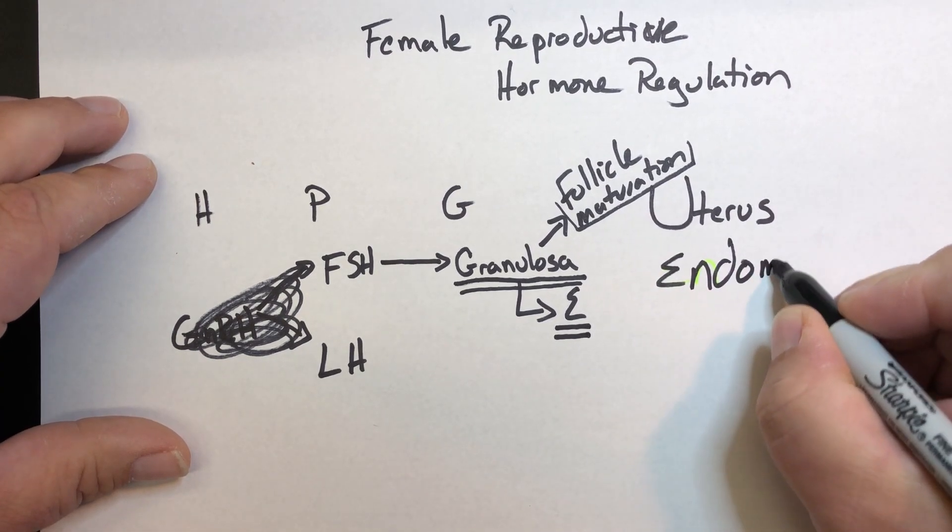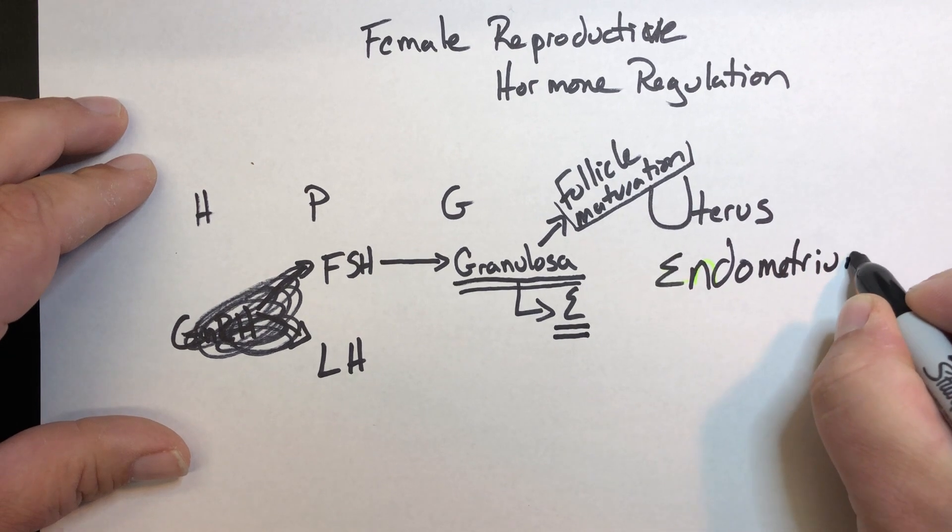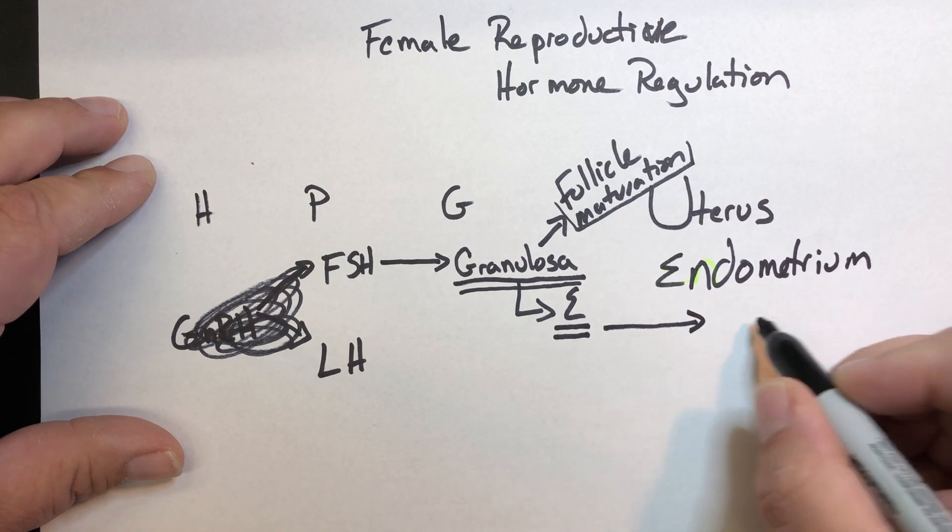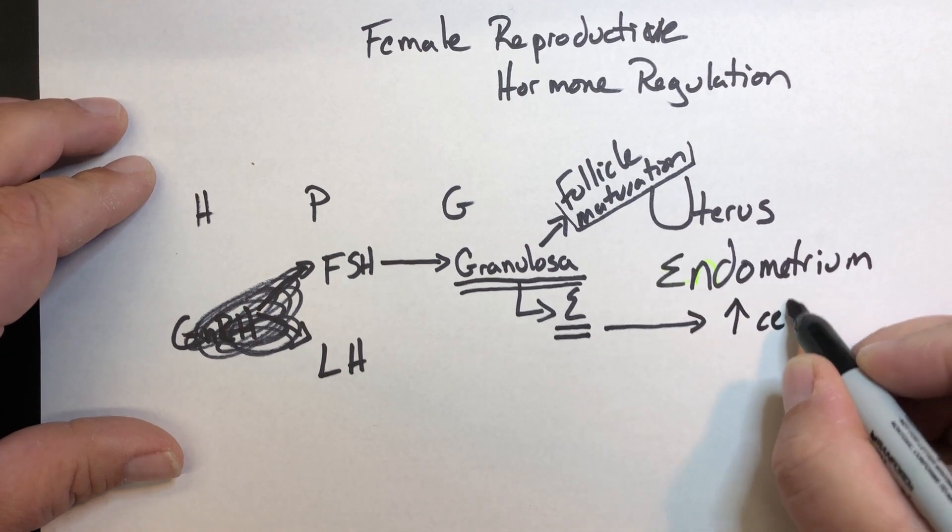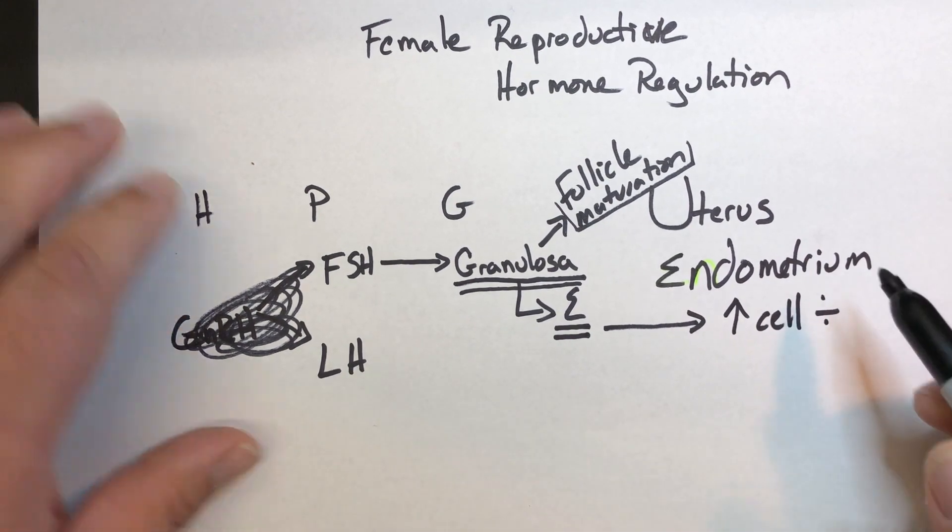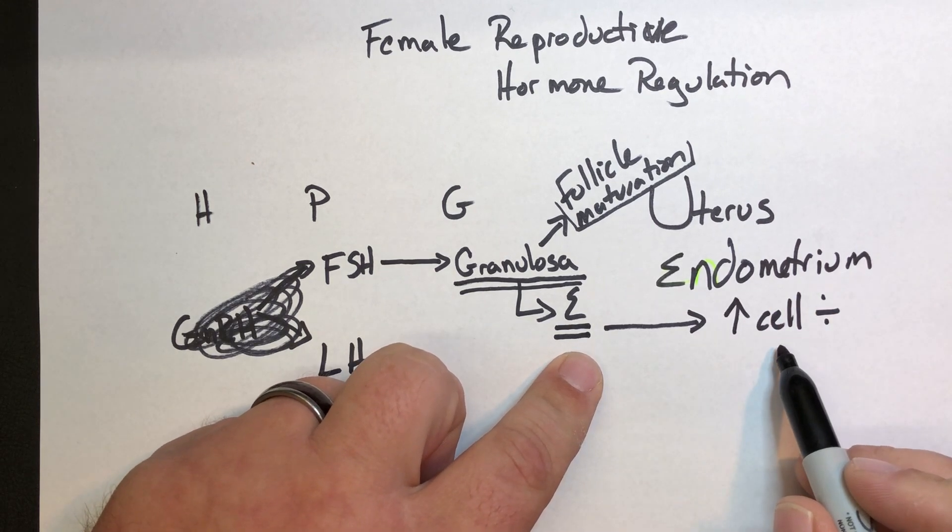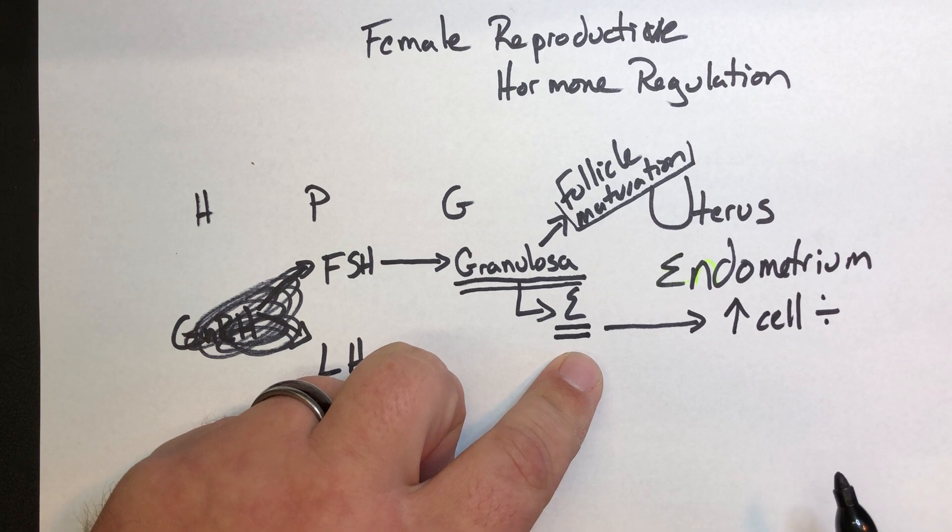So target is the endometrium. And what we see is that estrogen's effect is that it increases cell division. So during the phase where there's a lot of estrogen, we see an increase in cell division and an increase in the size of the endometrium.